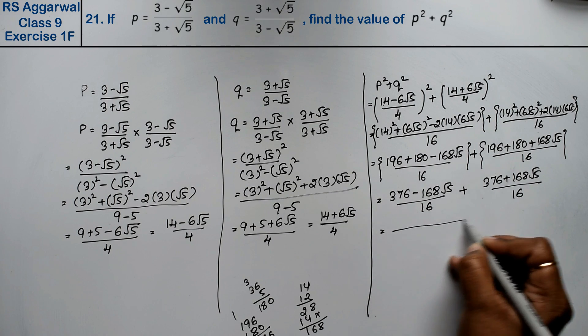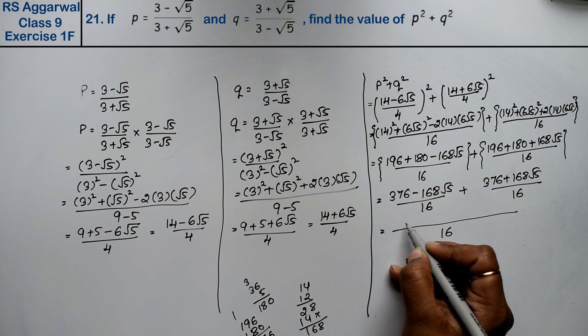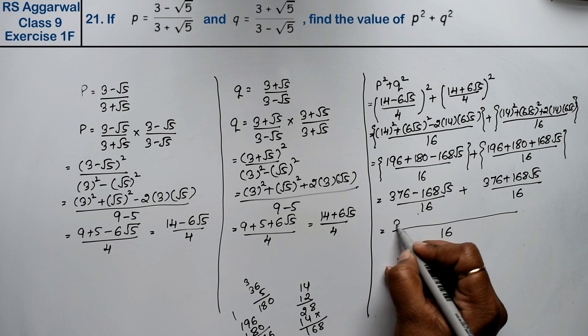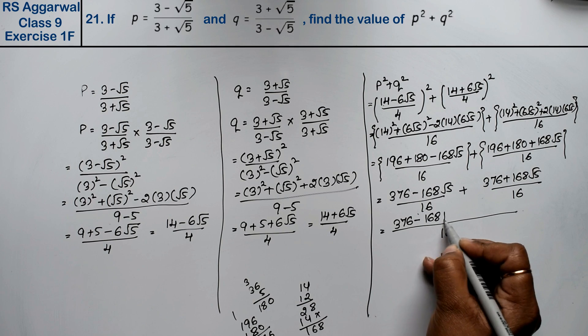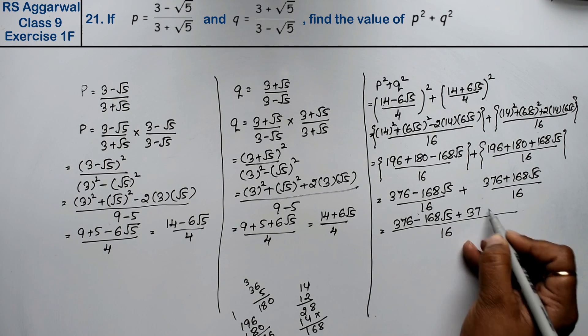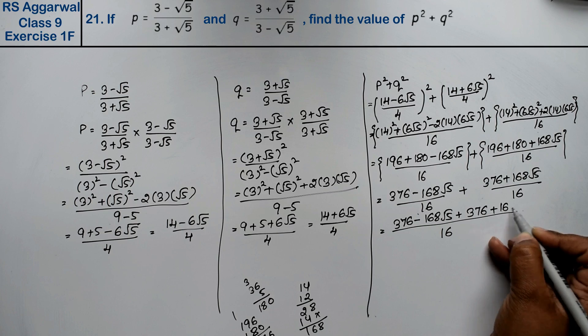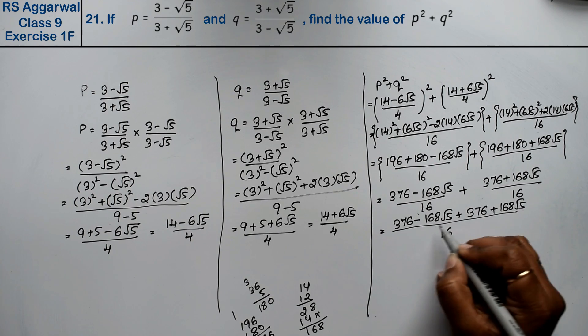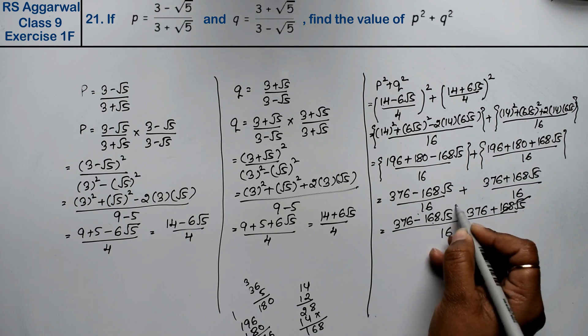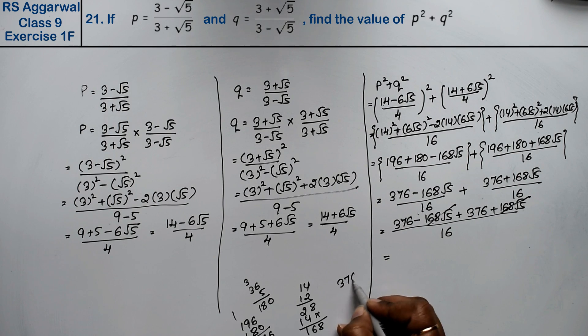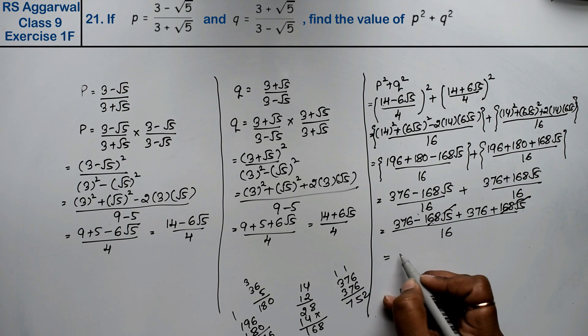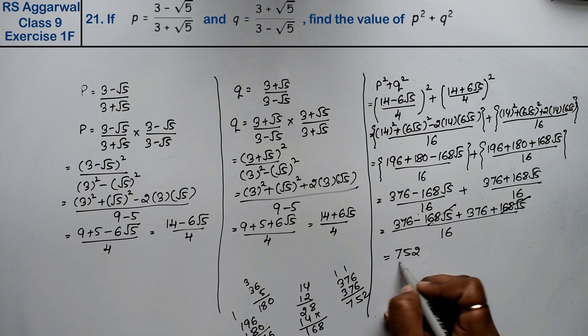We will take LCM, which is 16. We take the values as it is above because there is a plus sign: 376 minus 168 root 5 plus 376 plus 168 root 5. This minus and this plus cancel out. So 376 plus 376 equals 752 upon 16.